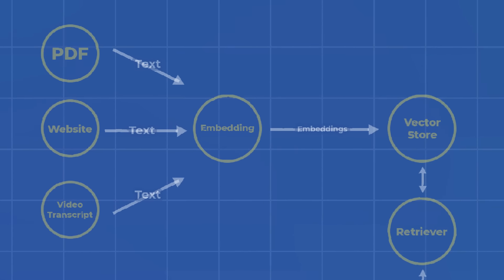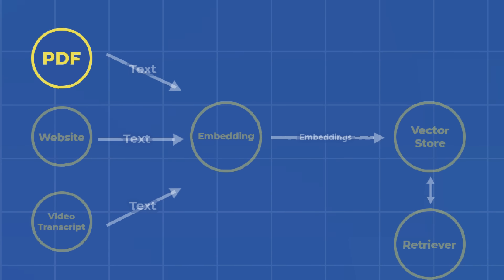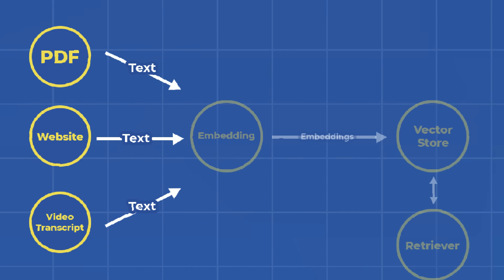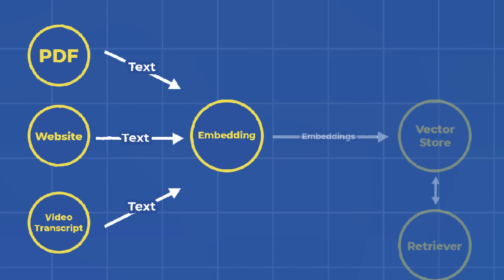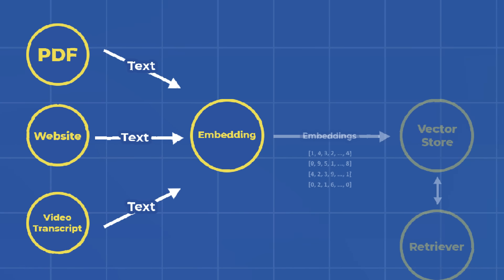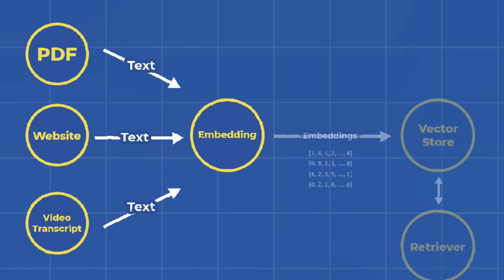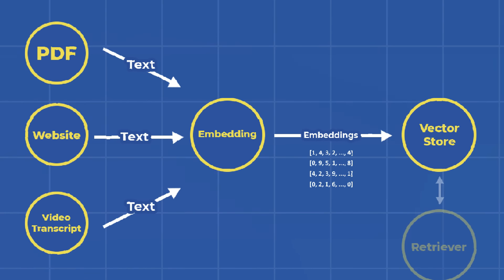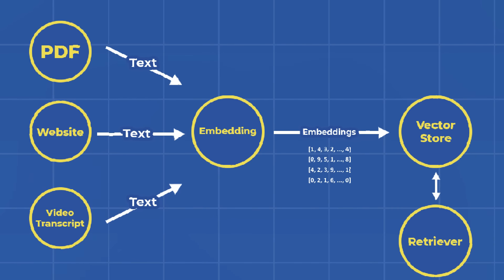First off, we're going to end up taking information from PDFs, websites, and video transcripts. We'll grab all the text from those different sources and then embed them — meaning we're going to take that text and convert it to numbers called embeddings, which are just the numerical representation of text. The reason we want to do that is because computers are great at comparing numbers, not great at comparing text. Once we have all those embeddings, we're going to save them to a vector store so that we can search through them at a later point.